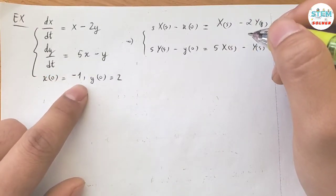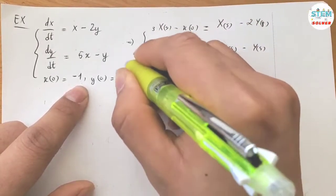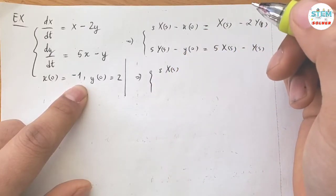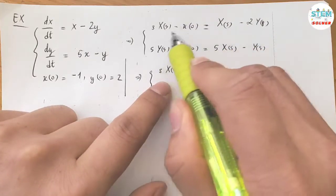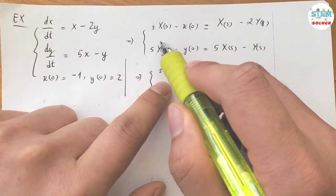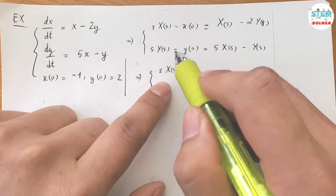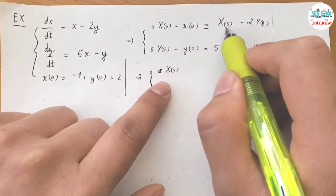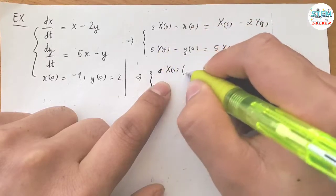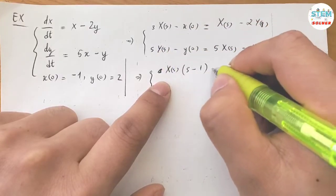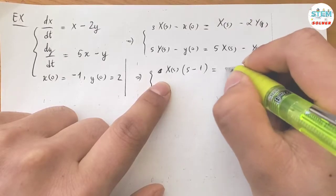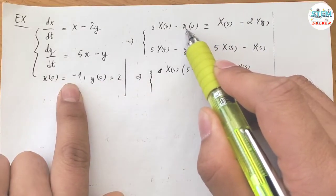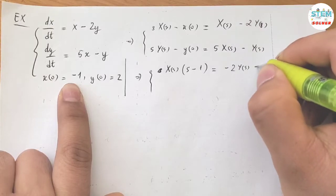Now plugging in the initial conditions, I have s·X(s) — I'm going to put X to one side and distribute it out. Move this to the left side and distribute: I have (s minus 1) on the left in parentheses. For x(0) equals negative 1, moving to the other side gives positive 1, then negative 1 on the right.